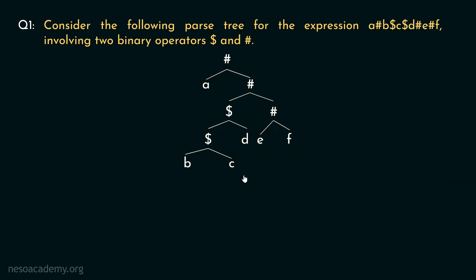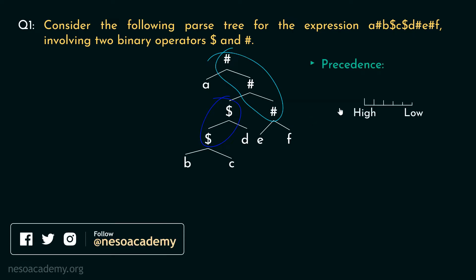So this is the parse tree. Observe the dollar operators are being derived in the lower levels than these hash operators. So clearly precedence wise dollar has higher order than hash. Now notice the dollar operator. It is expanding to the left only.